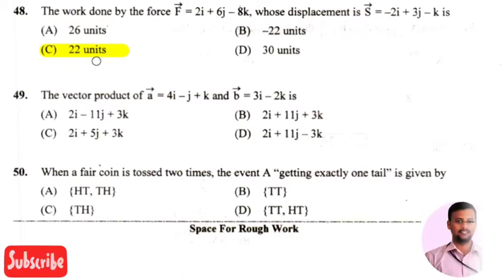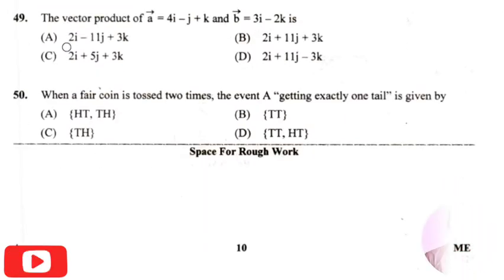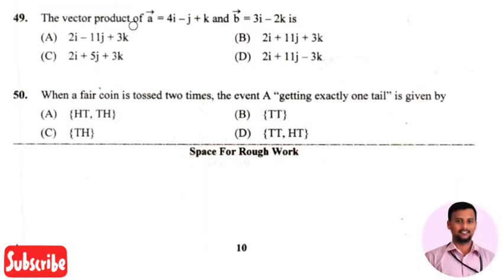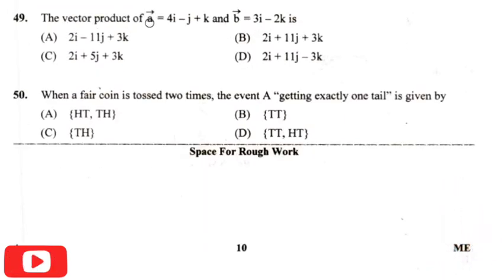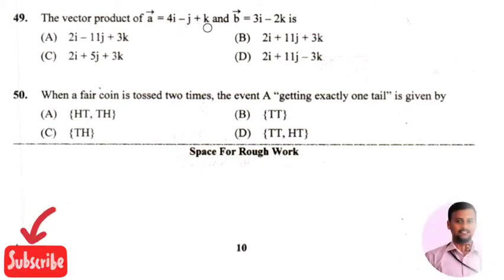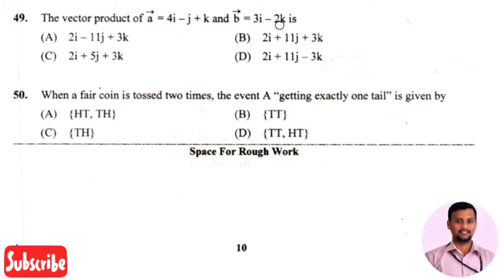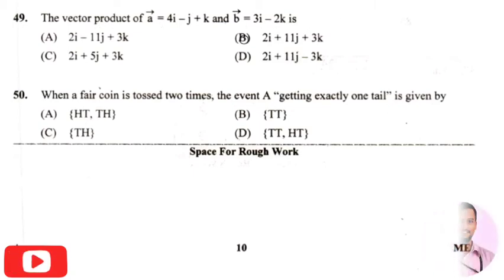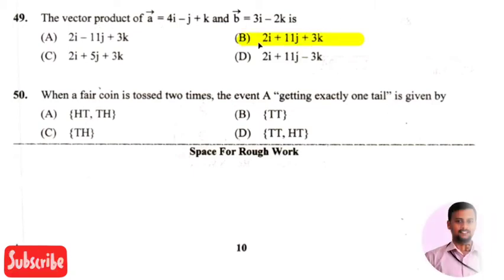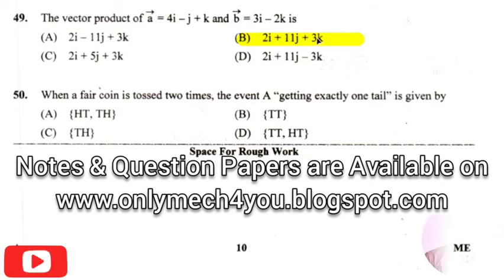The next question is the vector product of vector a equals four i minus j plus k and vector b equals three i minus two k — the right answer is option two, that is two i plus eleven j plus three k.